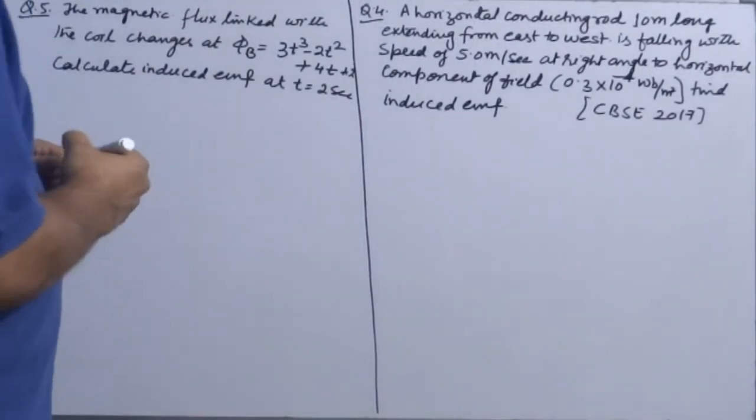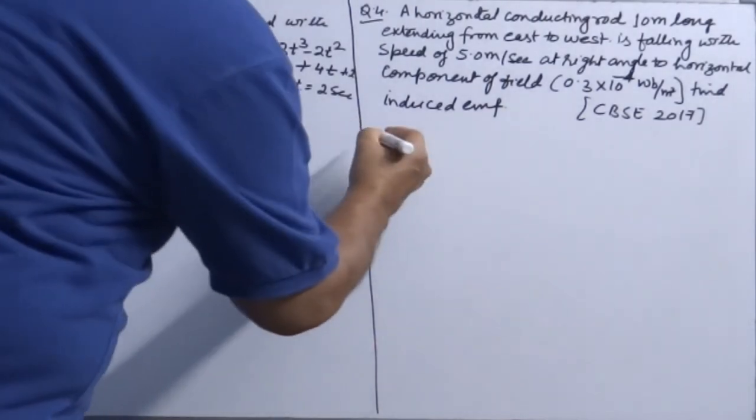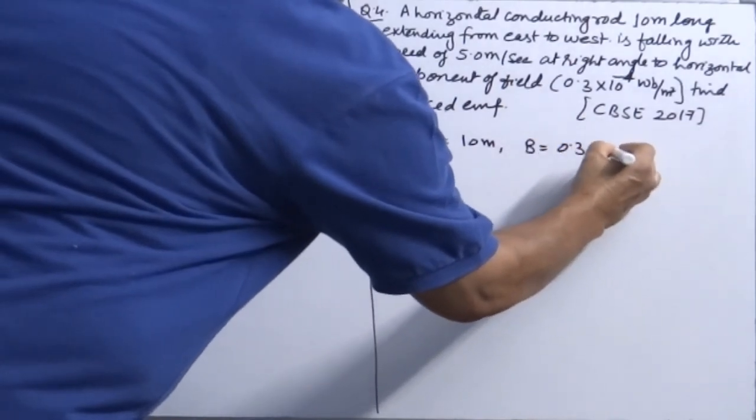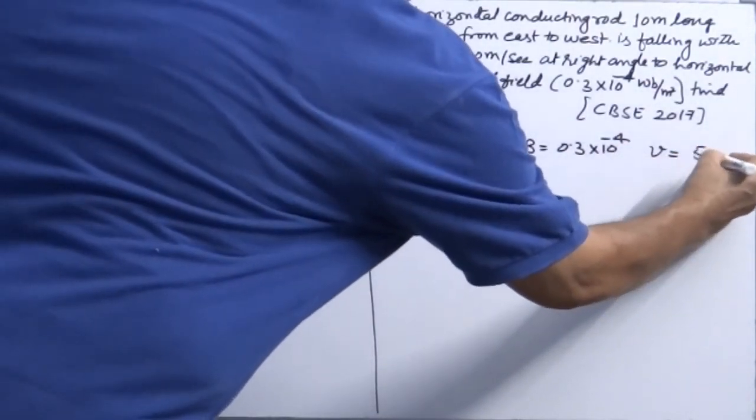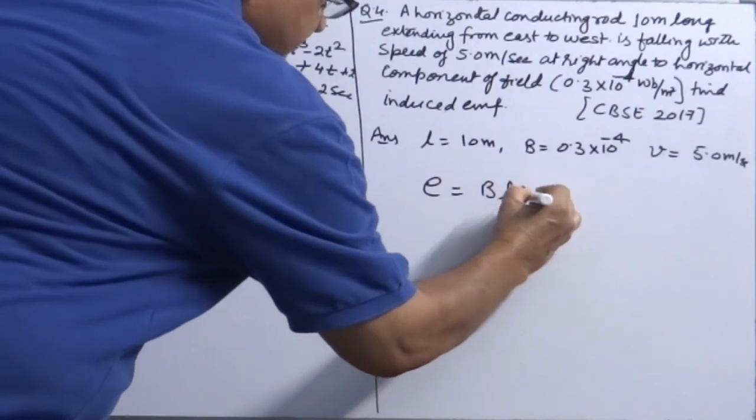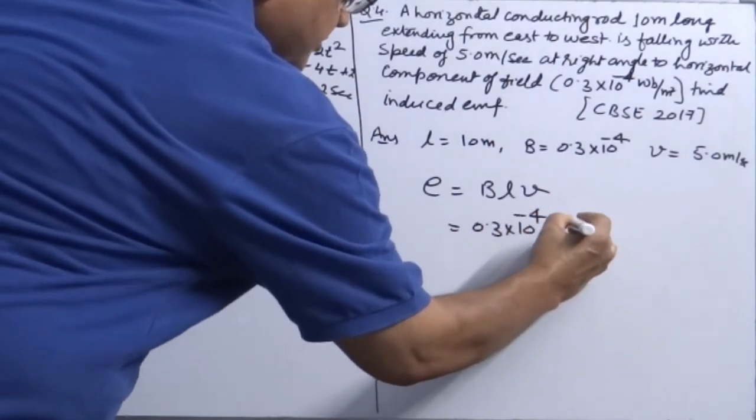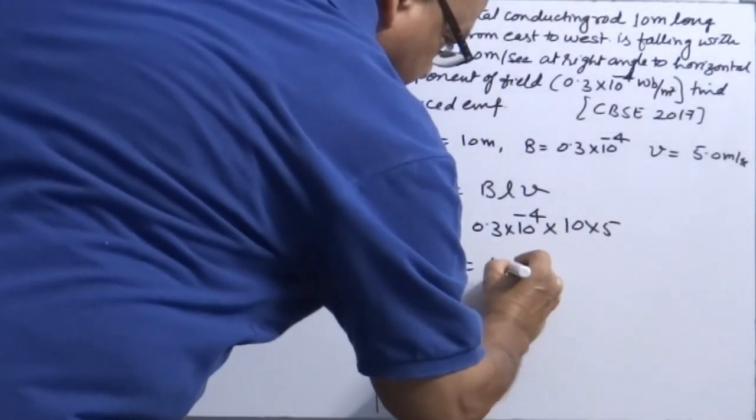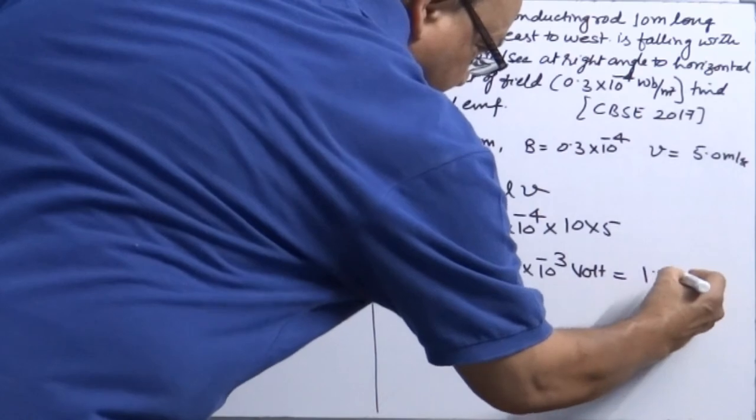Two more simple questions. One is asked in CBSE 2017. Horizontal conducting rod of 10 meter long, so L is 10 meter. Strength of horizontal magnetic field 0.3 times 10 to the power minus 4 and speed is 5 meter per second. So all data are available. Induced EMF is BLV. It is a straight conducting rod. 0.3 times 10 to the power minus 4 into 10 into 5. So you can write it as 1.5 into 10 to the power minus 3 volt or 1.5 millivolt.